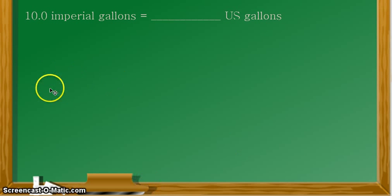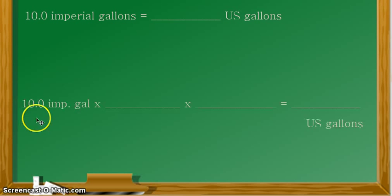So we now do the calculation. The given is 10.0 imperial gallons. We have abbreviated the imperial gallons to IMP gallons. Then we have here two blanks telling us that we need two equivalent statements to solve this problem and get the value in the unit of US gallons. So we have to know first our equivalent statements and write them here.